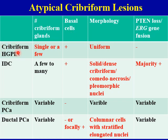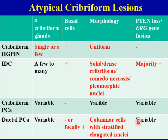In cribriform high-grade PIN, you typically see one or few atypical cribriform glands; basal cells are present, nuclei are uniform, and you don't see PTEN loss or ERG gene fusion. In intraductal carcinoma, basal cells are present, and you will see one of these features: solid or dense cribriform architecture, comedic necrosis, or pleomorphic nuclei. The majority of IDC glands have PTEN loss and ERG gene fusion. In cribriform carcinoma, basal cells are absent. In ductal carcinoma, the cancer glands are composed of columnar-shaped cells with stratified elongated nuclei; basal cells are usually negative but can be focally positive in some cases.